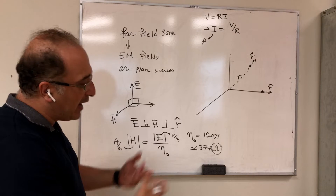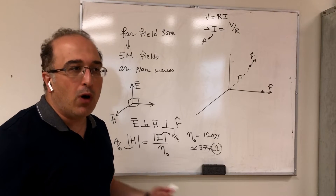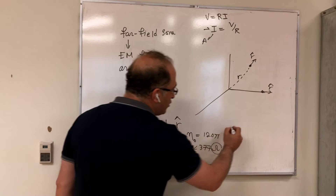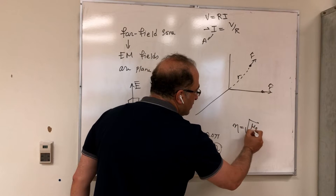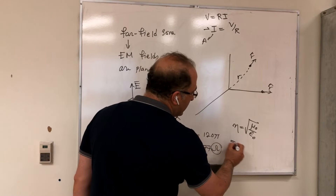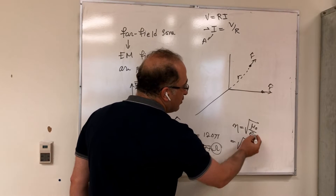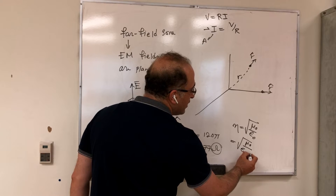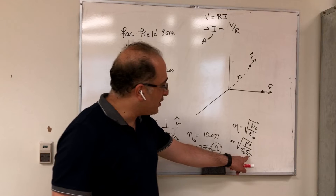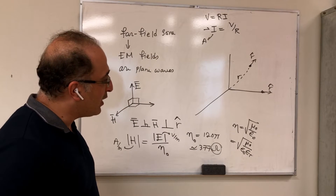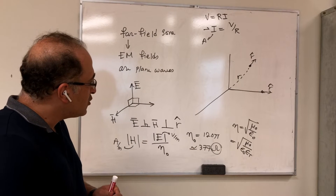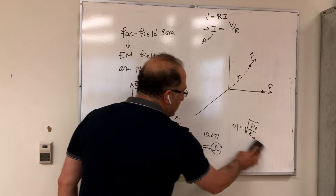η₀ is for free space. If we have an antenna in a different medium, for example water, then you have to use the impedance of that medium. To remind you, η is defined as √(μ₀/ε₀) in air. If you have a different medium, assuming that it's non-magnetic, it would be μ₀, but ε₀ could change — you'd have ε₀ times the relative permittivity of that medium. For example, for water, this number is around 80. So if you approximate it by 81 and take the square root, the impedance is going to be nine times smaller.